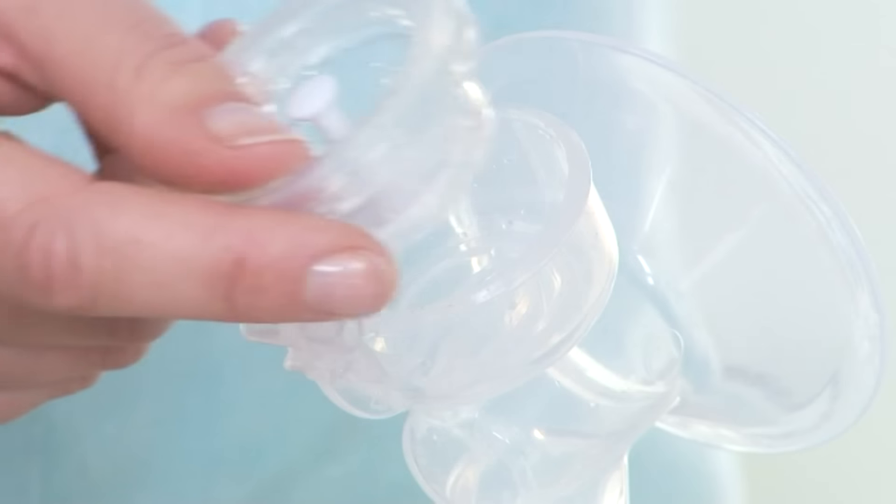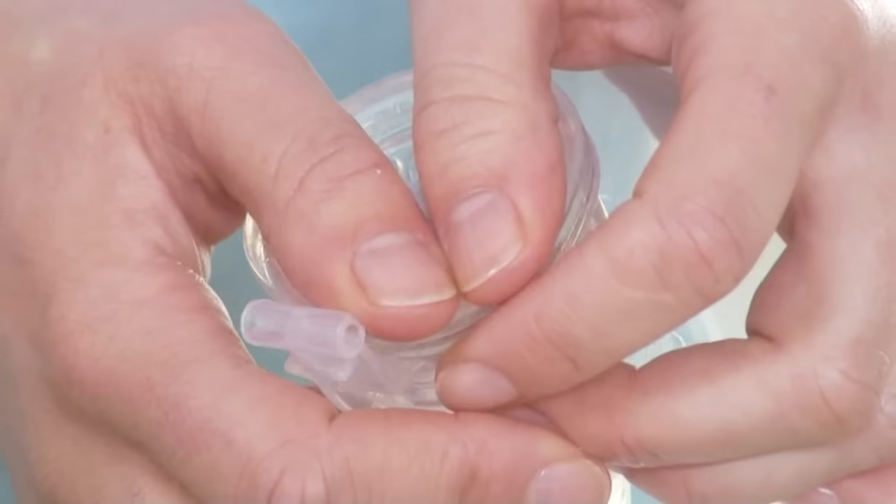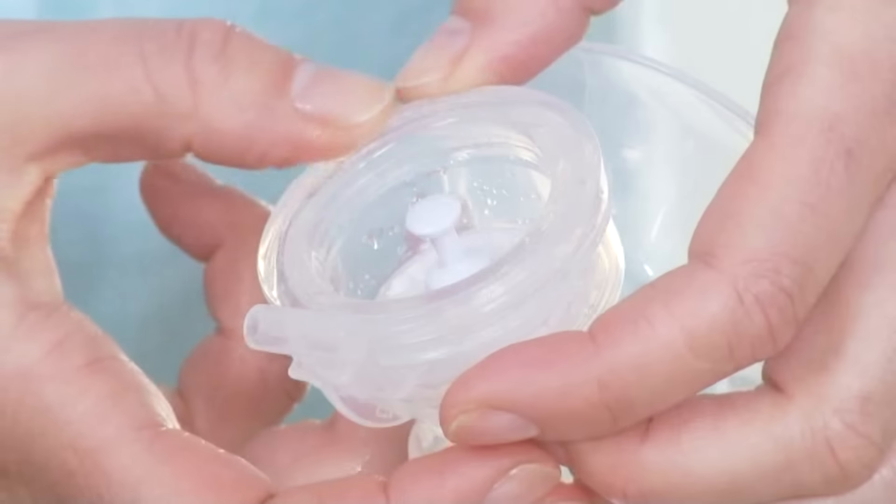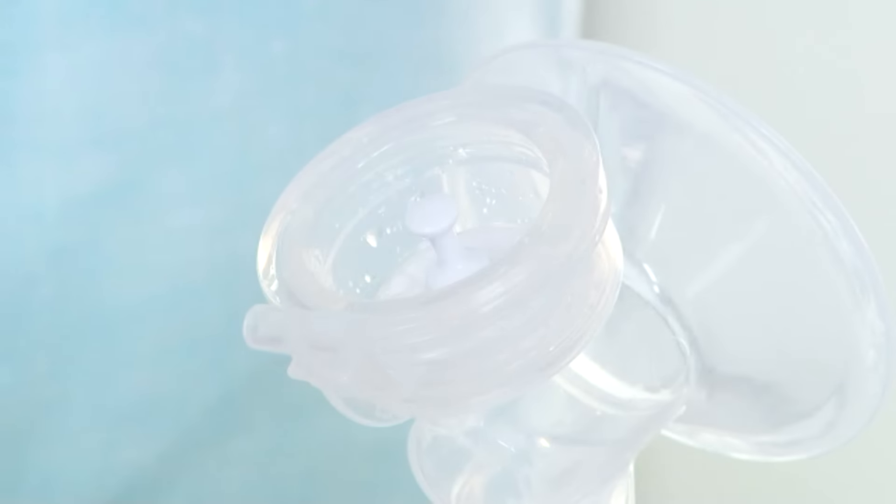Place the silicone diaphragm with stem into the pump body from above. Make sure it fits securely around the rim by pressing down with your fingers to ensure a perfect seal.